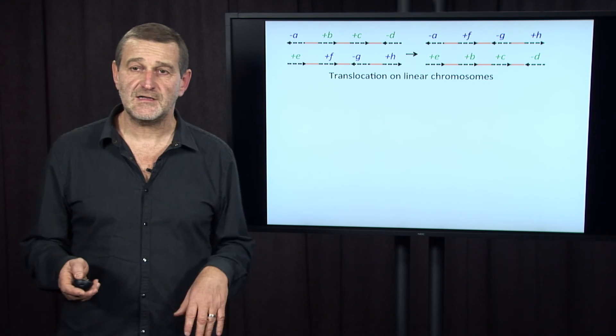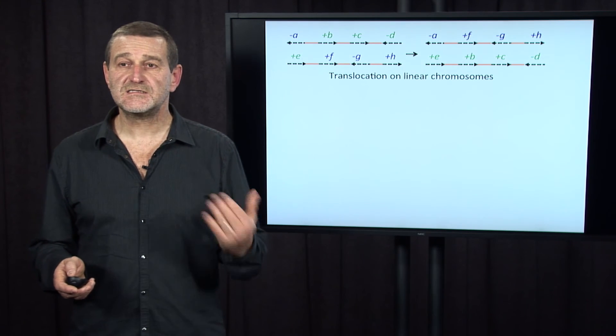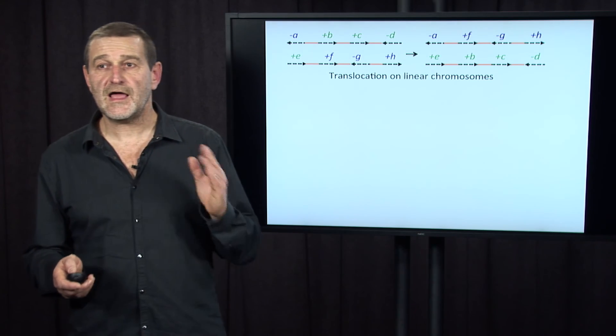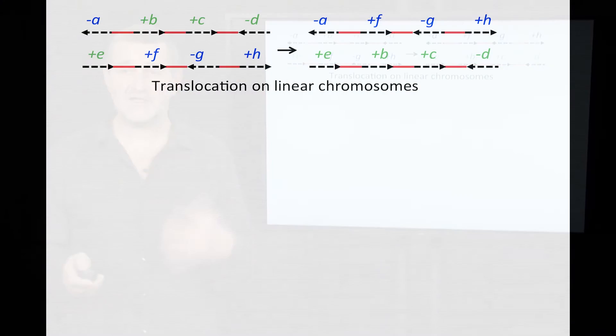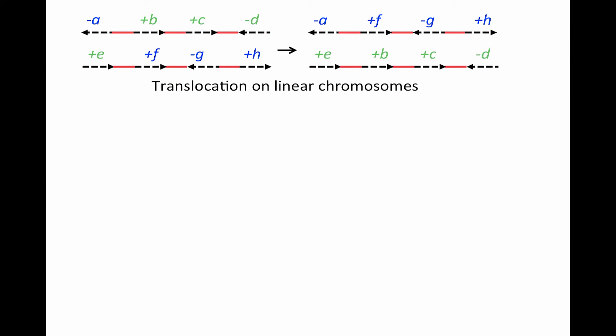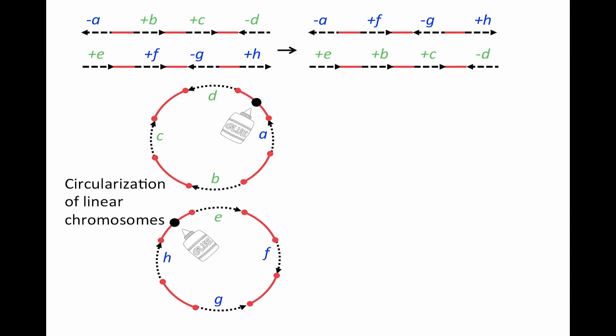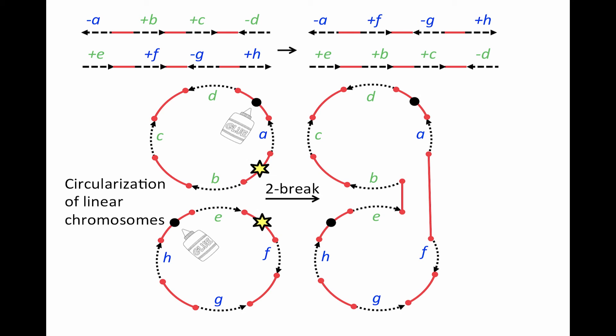What about translocations? It's the same story. Here are two linear chromosomes that, after translocation, transform into a blue chromosome and a green chromosome. We represent them as black-red paths, then circularize them by gluing the ends using red edges. After circularization, we perform a two-break — choosing two edges, removing them, and substituting two new red edges. Afterwards, we remove the edges used for circularization, which is essentially linearization of the circular chromosomes. This mimics translocation using our graph.